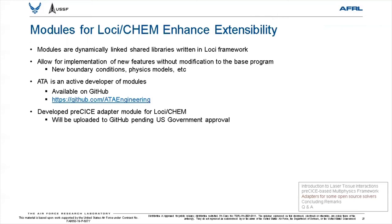Modules greatly enhance the extensibility of Loci-Chem. Modules themselves are dynamically linked shared libraries written in the Loci framework. They allow for the implementation of new features without any modification to the base program. Modules can be used to add new boundary conditions, physics models such as turbulence models, coupling to other codes, or even enable the output of new variables. At ATA, we are active developers of modules for Loci-Chem, and many of these modules are available on our GitHub page. The PreSize adapter module we developed for Loci-Chem will also be uploaded to our GitHub page pending approval from our U.S. government sponsors.